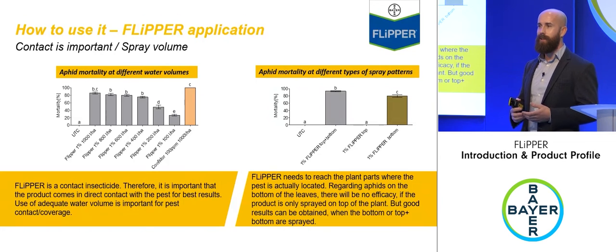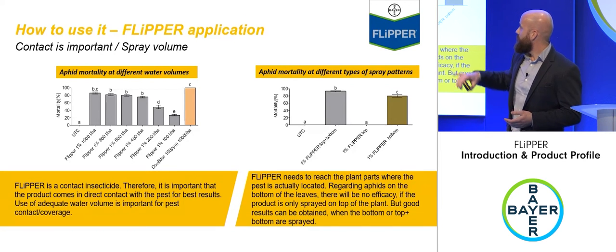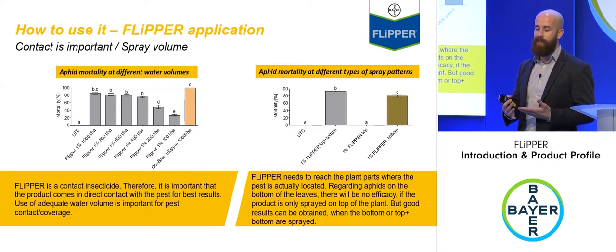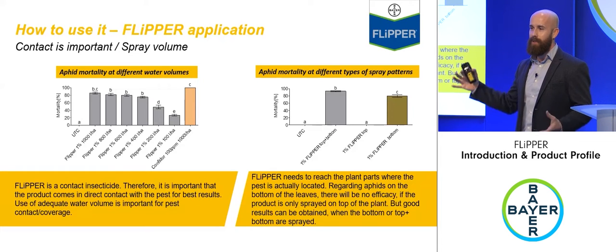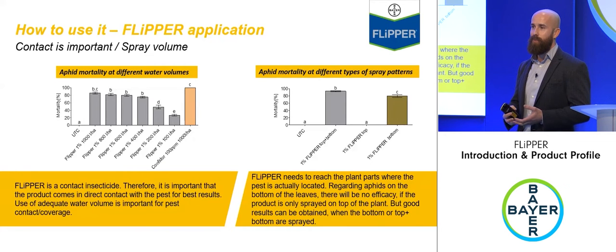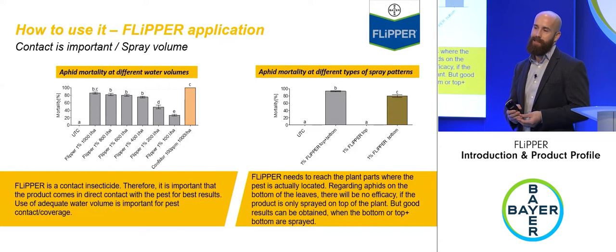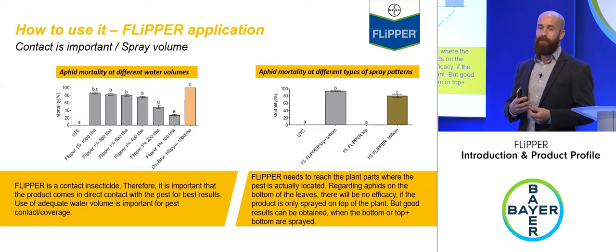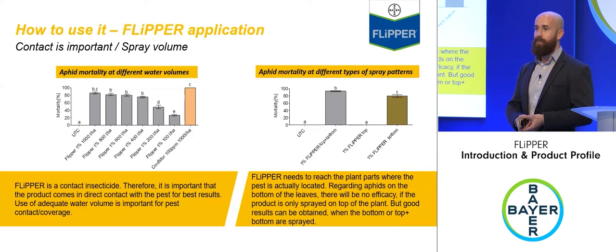Bayer also examined practical application factors, specifically aphid mortality at different water volumes while maintaining the dose rate. Flipper needs water to carry the active into the insect. If you drop below around 300-400 litres per hectare, efficacy starts to drop off. This is an important consideration when moving from high-value crops — which use high water volumes — into broad-acre vegetables where water volumes are much lower.